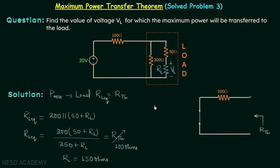Setting RL_eq equal to RTH = 100 ohms, we find that R_L should equal 150 ohms in order to transfer maximum power to the load. But this is not what we want — we want to find the value of VL. We can obtain VL by multiplying R_L by the current in this branch, which we will call I_L.